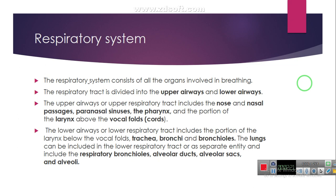So basically, the respiratory system is divided into two parts: the upper respiratory tract and the lower respiratory tract. The upper respiratory tract consists of the nose, nasal passages, paranasal sinuses, pharynx, vocal cords, and the portion of the larynx. The lower respiratory tract consists of the larynx below the vocal cords, the trachea, bronchi, and bronchioles. We can also include the lungs in the lower respiratory tract or take them as a separate entity, including the respiratory bronchioles, alveolar ducts, alveolar sacs, and the alveoli.